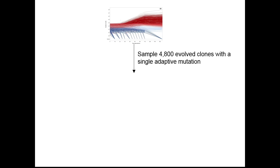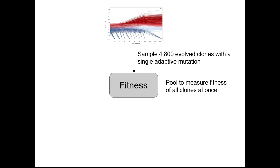We sampled 4,800 clones from a time point where we later showed they had single adaptive mutations, getting around the multiple mutations problem. We developed additional methods to measure the fitness of all these clones in a single pooled assay — 5,000 fitness measurements in one flask, repeated many times to get very precise estimates. From this we get a fitness distribution of the adaptive events occurring, which is hopefully a fairly comprehensive understanding of what's going on.